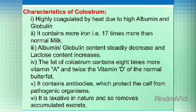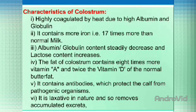Then the characteristics of colostrum. First, it is highly coagulated by heat due to high albumin and globulin content. It contains more iron — 17 times more than normal milk. The albumin and globulin content steadily decreases while lactose content increases. The fat of colostrum contains 8 times more vitamin A and twice the vitamin D of normal butter fat. It contains antibodies which protect the calf from pathogenic organisms. Finally, it is laxative in nature and removes accumulated excreta.